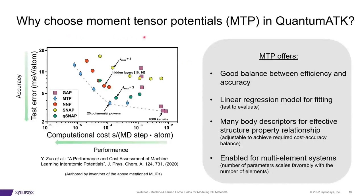Let's look at the reason why we chose moment tensor potentials for Quantum ATK. Looking at the graph on the left-hand side, many different machine-learning force fields in the market are compared. This is taken from a paper authored by the inventors of the respective machine-learning force fields themselves, so it is as unbiased as it can get. In this graph, computational cost is along the x-axis and accuracy along the y-axis. To be cost-effective, a model has to be at the bottom-left corner. You can see how MTP, marked by the diamond symbol, is completely blanketing the left flank.